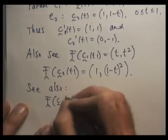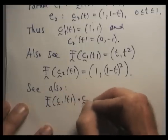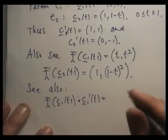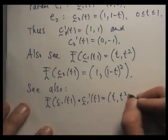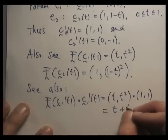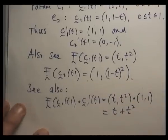F of C1(t) dotted with C1 dash. What's that going to be? That's going to be (t, t²) dotted with (1,1). So we get t plus t².